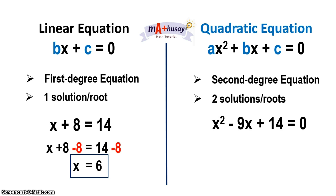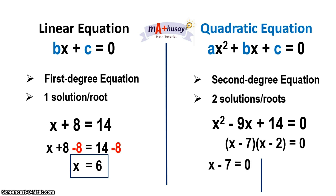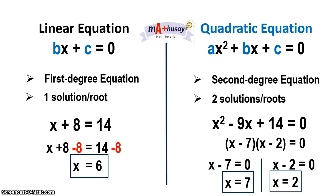On the other hand, a quadratic equation has 2 roots or solutions. For example, x squared minus 9x plus 14 equals zero — when you factor this and solve for x, you get the quantity of x minus 7 times x minus 2 equals zero. Using the zero product property: x minus 7 equals zero gives x equals 7, and x minus 2 equals zero gives x equals 2. So for a quadratic equation there are two solutions, while for a linear equation there is only one.